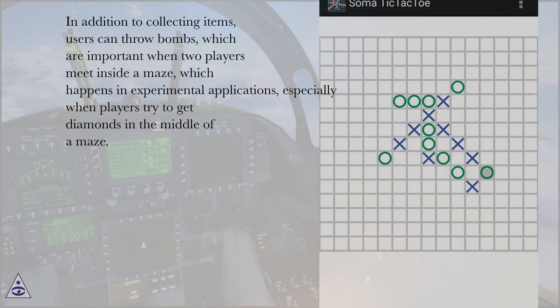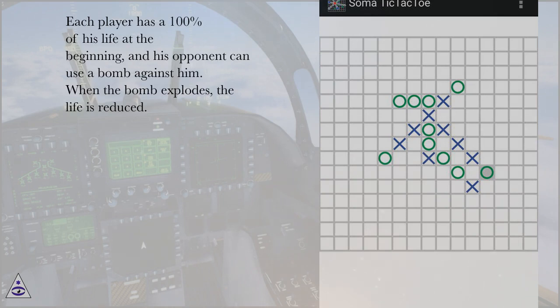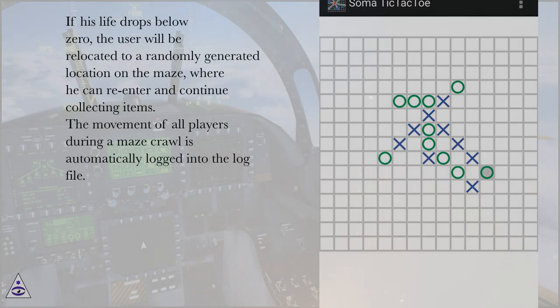In addition to collecting items, users can throw bombs, which are important when two players meet inside a maze, which happens in experimental applications, especially when players try to get diamonds in the middle of a maze. Each player has 100% of his life at the beginning, and his opponent can use a bomb against him. When the bomb explodes, the life is reduced. If his life drops below zero, the user will be relocated to a randomly generated location on the maze, where he can re-enter and continue collecting items.